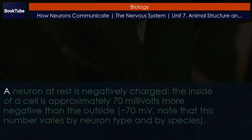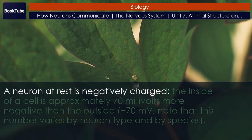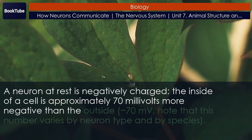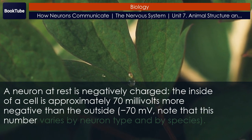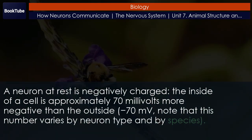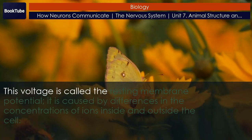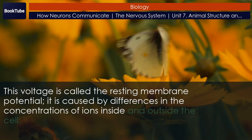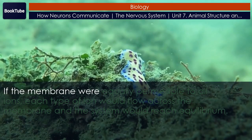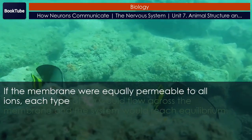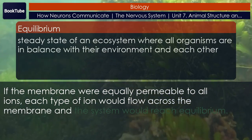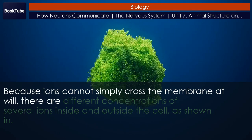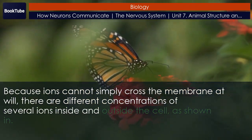Resting membrane potential. A neuron at rest is negatively charged. The inside of a cell is approximately 70 millivolts more negative than the outside, at minus 70 millivolts. Note that this number varies by neuron type and by species. This voltage is called the resting membrane potential, and it is caused by differences in the concentrations of ions inside and outside the cell. If the membrane were equally permeable to all ions, each type of ion would flow across the membrane and the system would reach equilibrium. Because ions cannot simply cross the membrane at will, there are different concentrations of several ions inside and outside the cell.